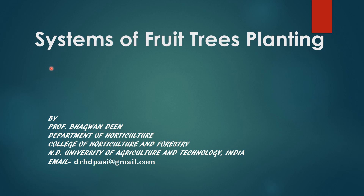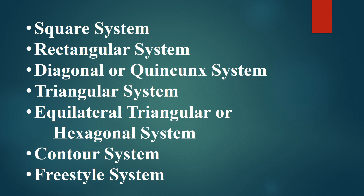Hi YouTube viewers. In this video we are going to learn about Systems of Fruit Tree Planting. These are different systems of planting that can be followed in planting of fruit trees: Square system, Rectangular system, Diagonal or Quintal system, Triangular system, Equilateral Triangular or Hexagonal system, Contour system, and Freestyle system. So now let us discuss one by one about all these planting systems of fruit trees.